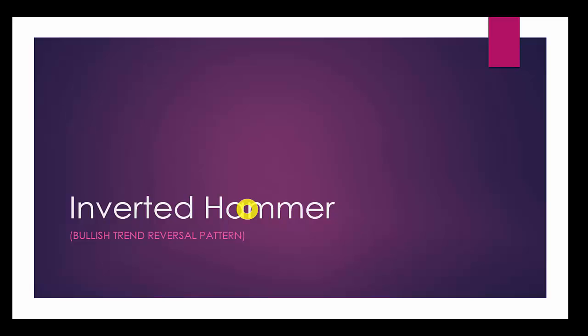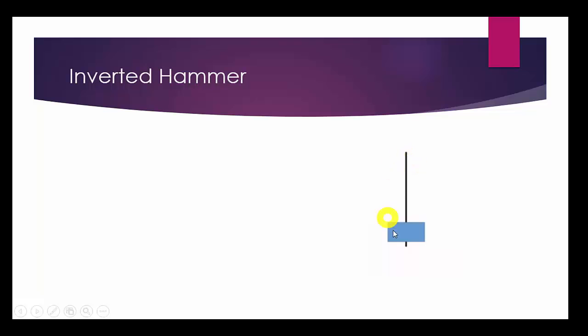Inverted hammer is a single candlestick pattern and it is the opposite of shooting star. Both shooting star and inverted hammer candlestick patterns are the same in shape. The only difference between these two candlestick patterns is their location. If we find such a pattern at the top, it will be a shooting star, but if we find it at the bottom, it will be an inverted hammer.